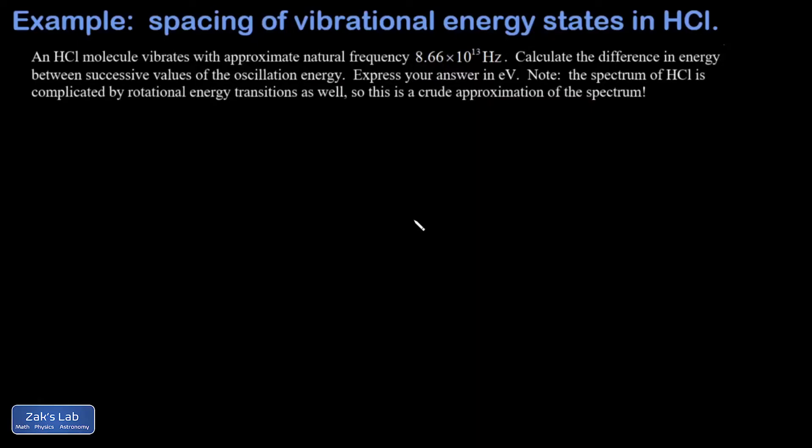In this video, we're computing the energy spacing of the vibrational energy levels of a hydrogen chloride molecule. We're told the vibration frequency of the molecule is 8.66×10^13 Hz, and we're asked to express our answer in electron volts.